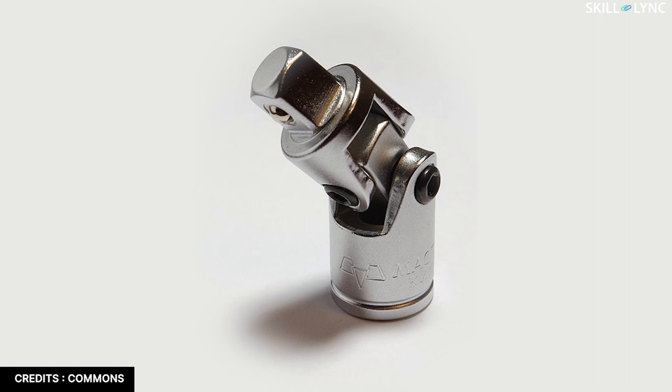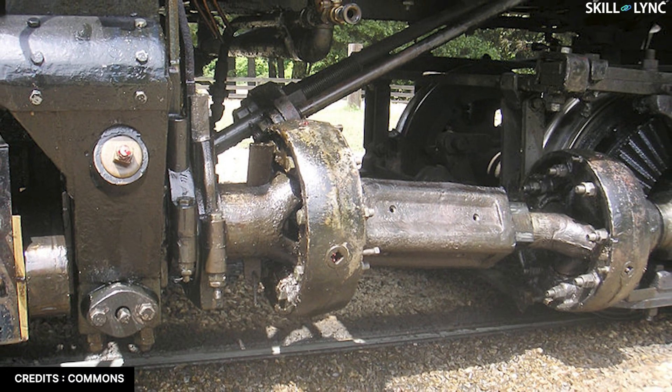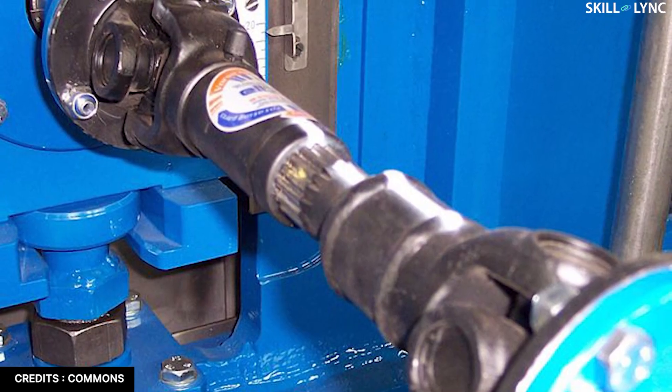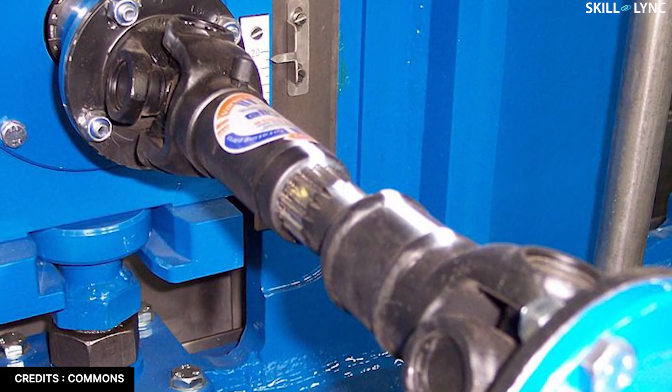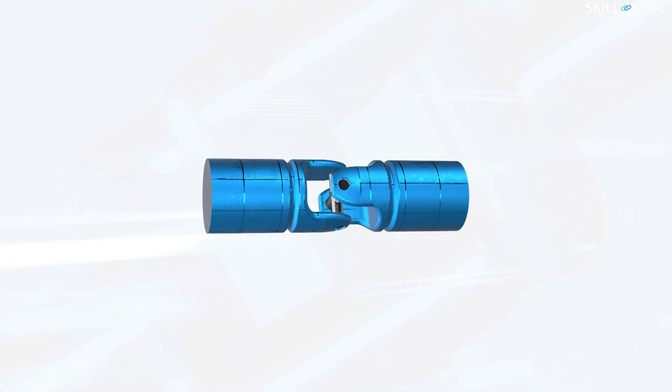A universal joint is a flexible mechanical joint that connects two rotating shafts. It can transmit motion even when the shafts are inclined. A universal joint is used in almost all machines that have long rotating shafts. It is predominantly used in automobiles. Right now, you can see a universal joint here.